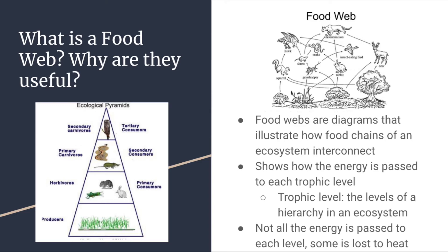Not all the energy is passed along the way. At each level, some of it is lost to heat. So the decomposers will never end up with as much energy as the producers. That's usually why higher-level consumers eat more or consume more energy.